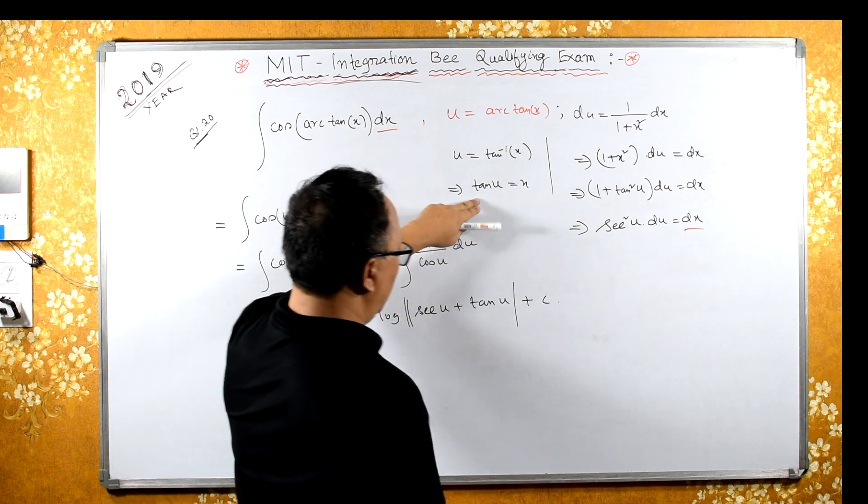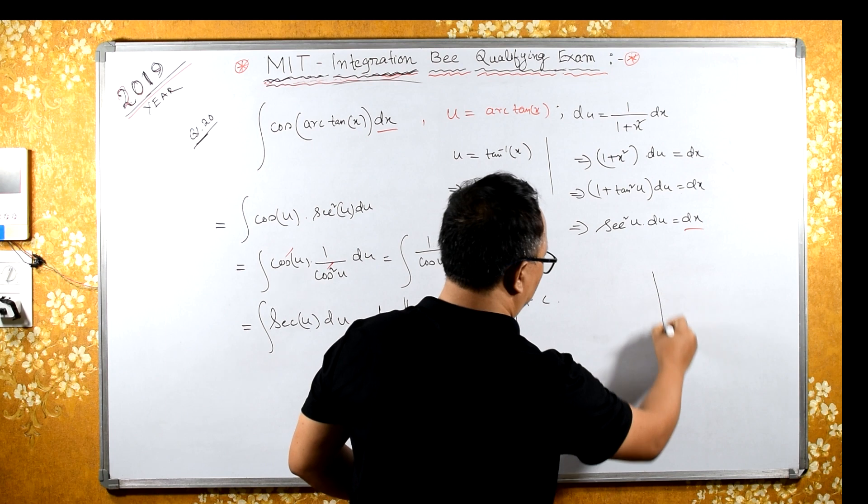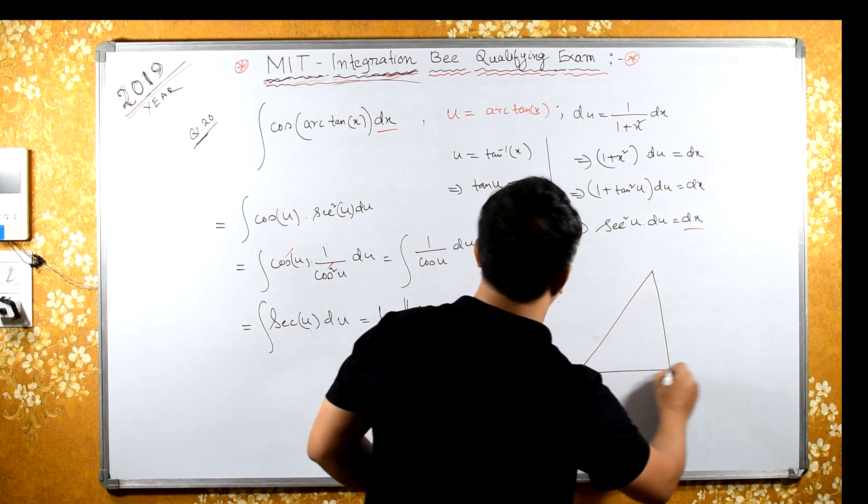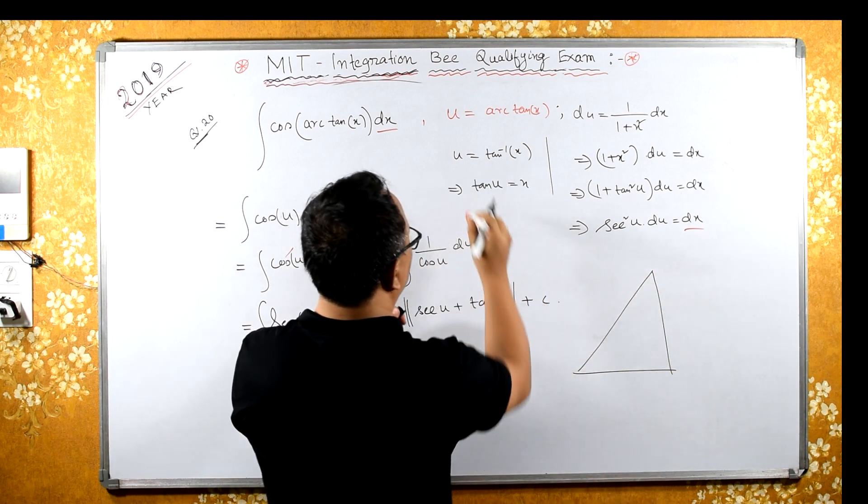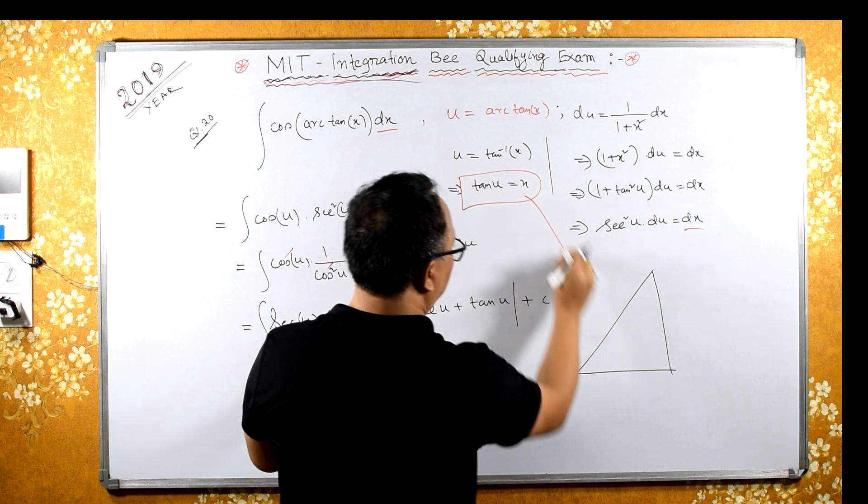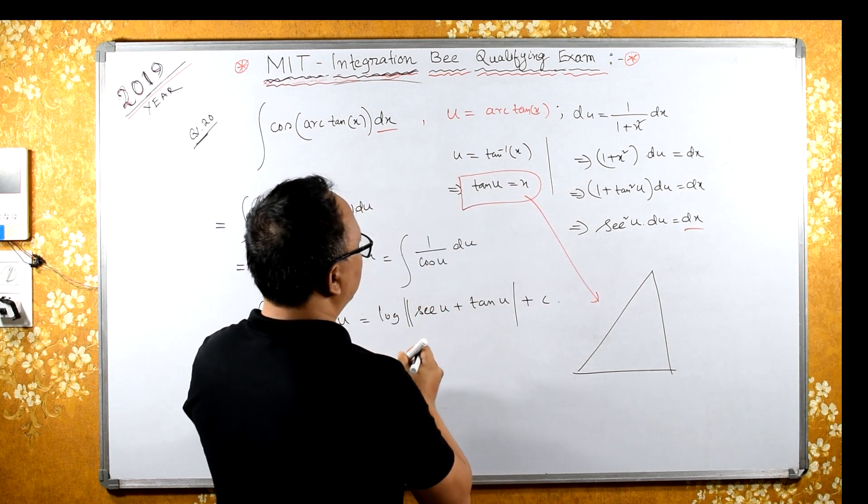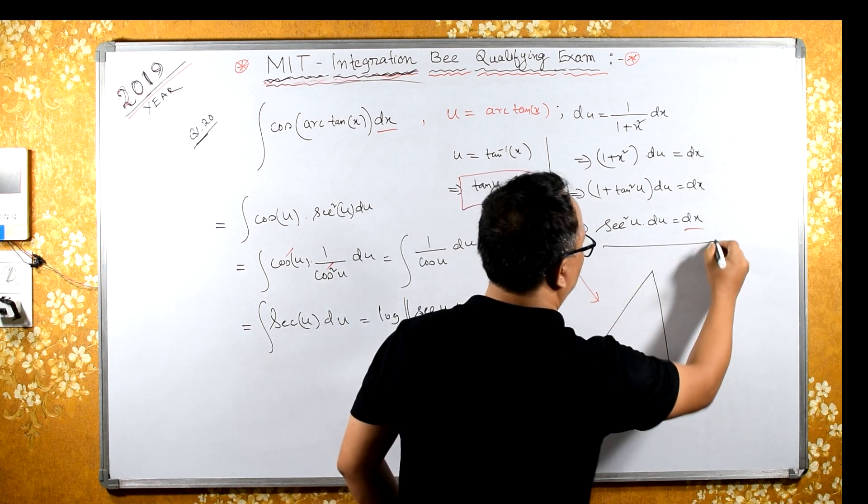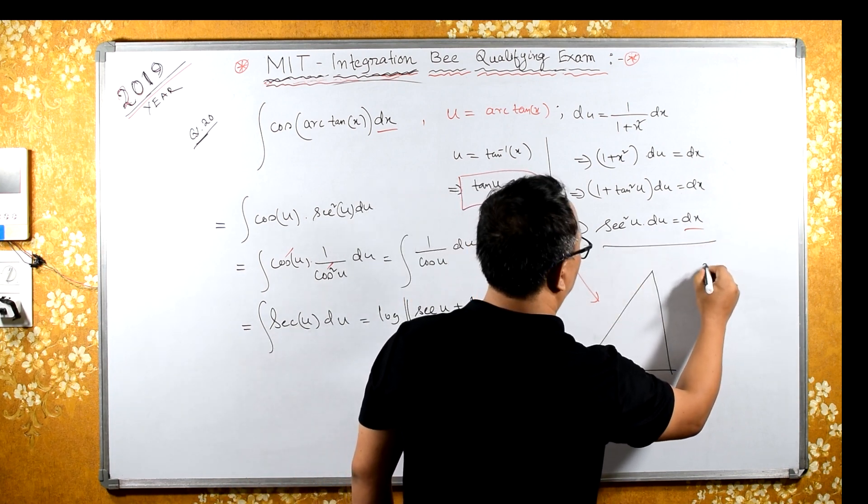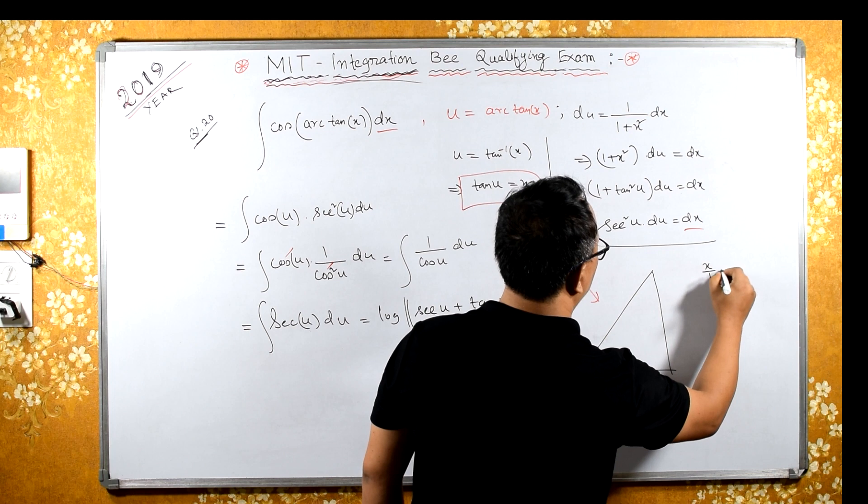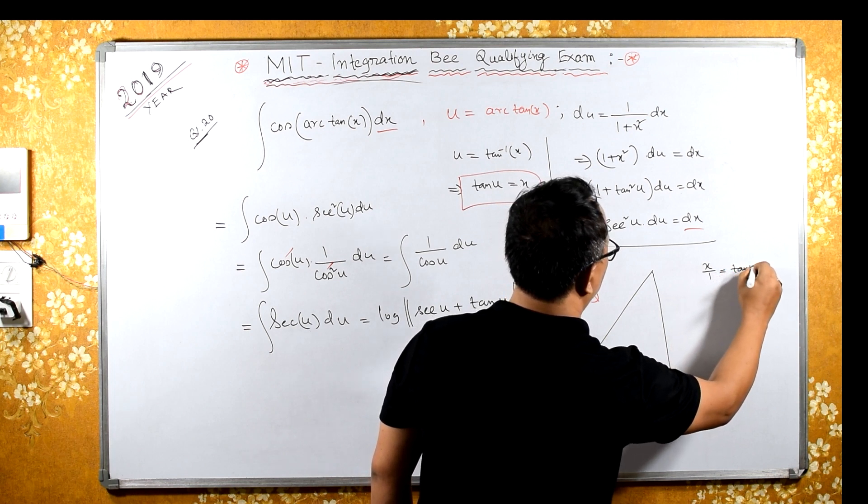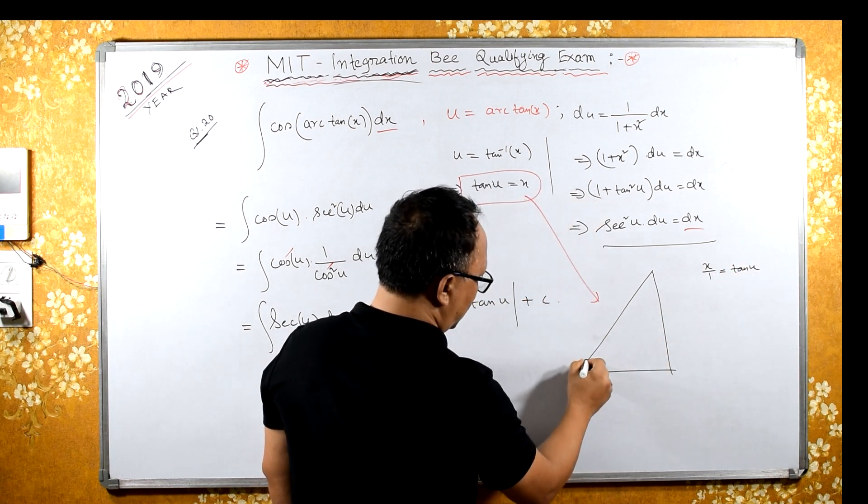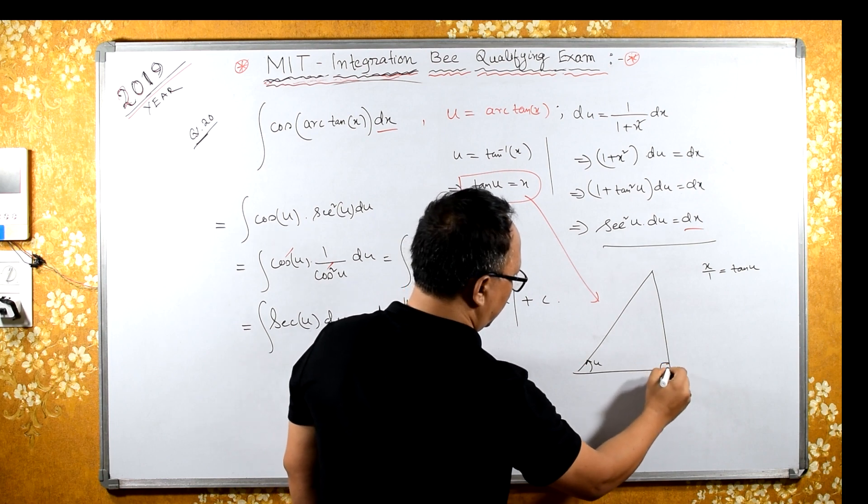We have a triangle over here. Look, x over 1 equals tan of u. This is u, this is 90 degrees.